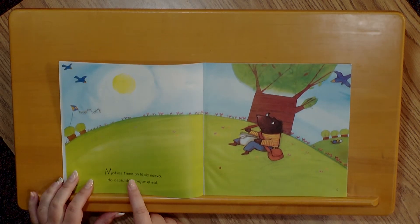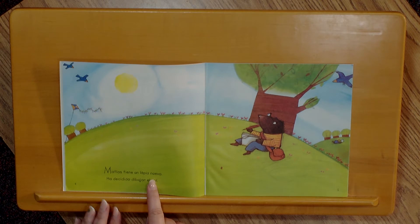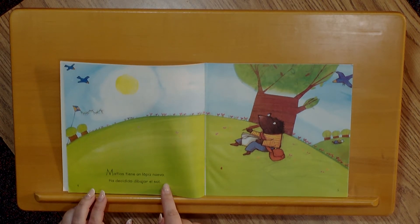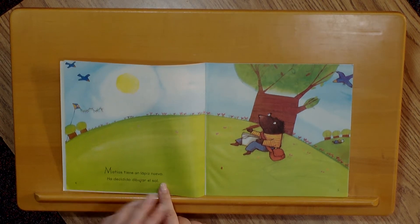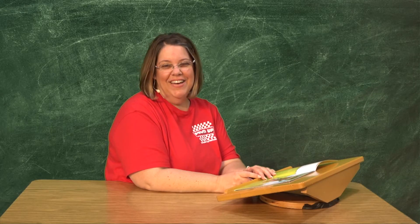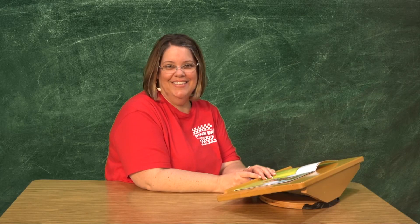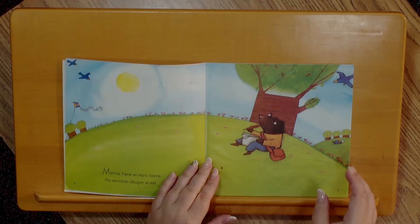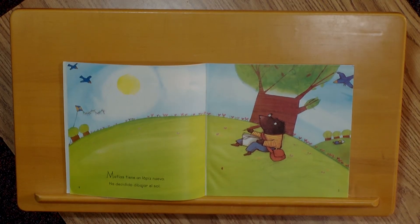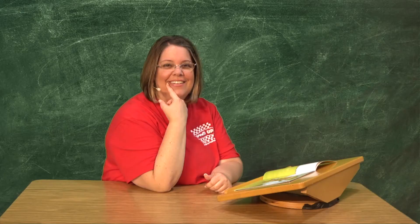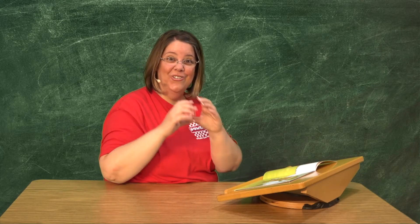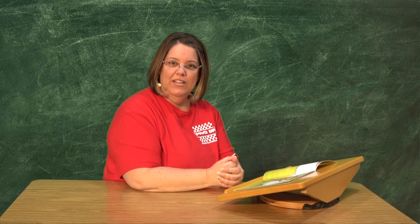Matías tiene un lápiz nuevo. Ha decidido dibujar el sol. ¿Qué va a dibujar Matías? Es cierto, se va a dibujar el sol. ¿Qué figura es el sol? Sí, es cierto. Es un círculo. ¿Ustedes saben dibujar un círculo? Me imagino que sí.